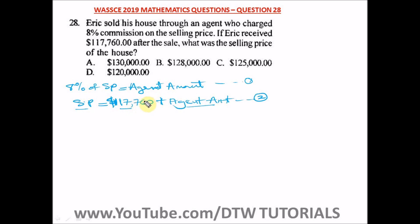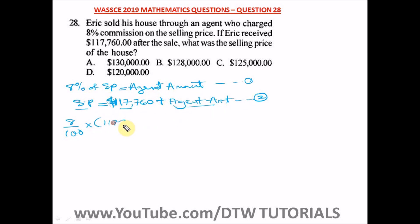From equation two, we know SP equals $117,760 plus the agent amount. We substitute this value of SP into equation one. We let the agent amount equal x to save space. So equation one becomes: eight percent of (117,760 plus x) equals x, which is 8 over 100 times (117,760 plus x) equals x.